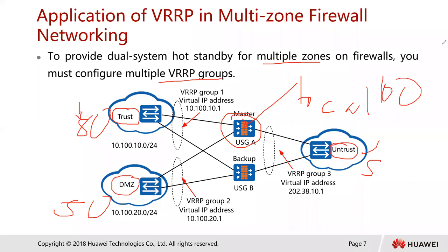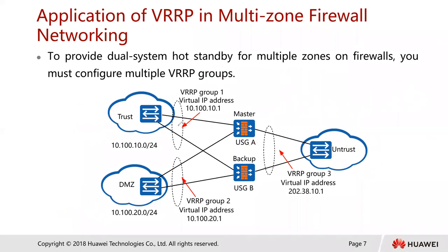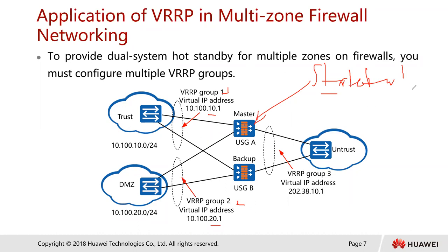For multiple zones on a firewall, you must configure multiple VRRP groups. We have VRRP group one with virtual IP address dot 10.1 and VRRP group two with dot 20. With firewalls performing stateful inspection, they track sessions — the first packet creates a session and subsequent packets are processed accordingly within that session without going through the full filtering process.